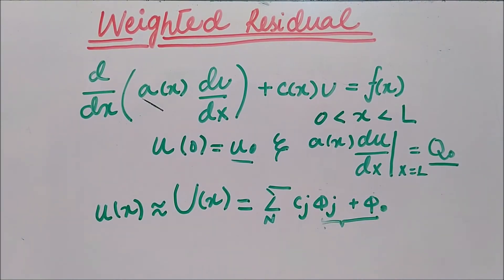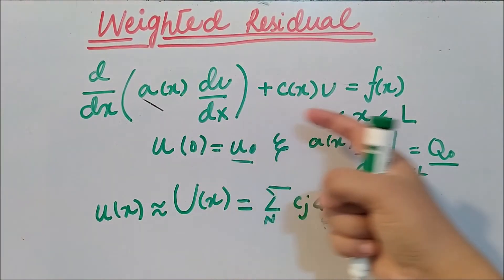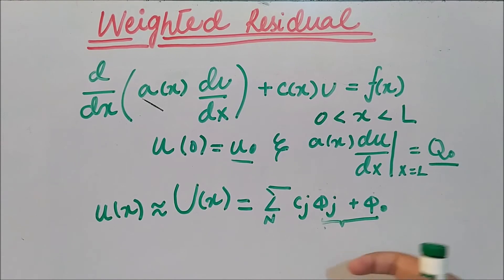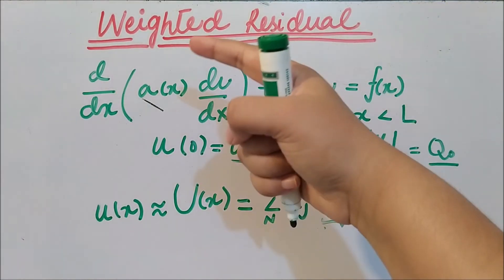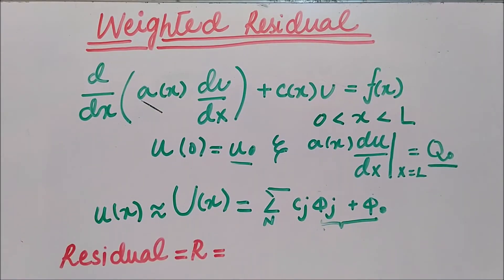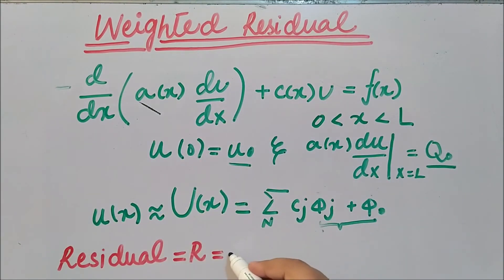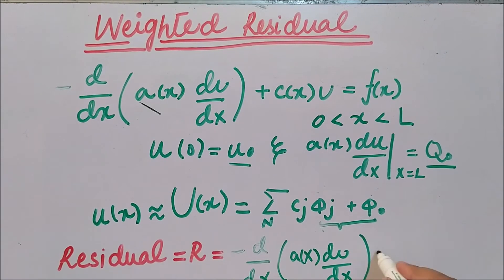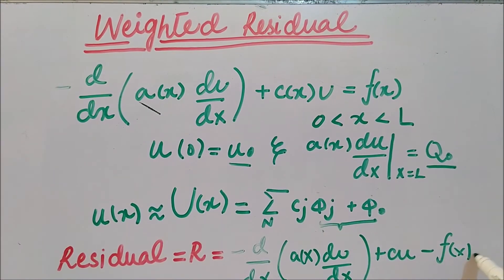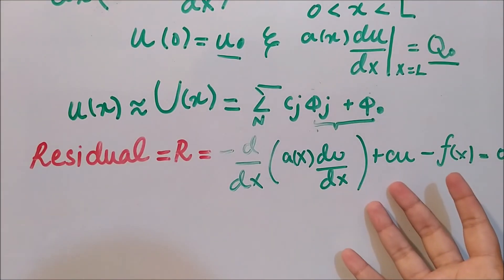Now we have seen how to approximate this differential equation with an approximate function. We need to discuss a few more things to understand what is meant by the weighted residual method. The residual — meaning a remainder — is represented by R, and it is the left-hand side of the differential equation: R = d/dx[a(x)·du/dx] + c(x)·u - f(x), which should equal zero. This is the residual in the weighted residual method.